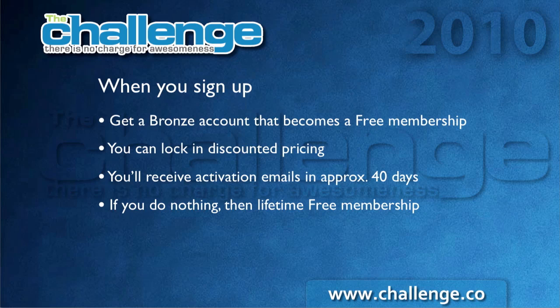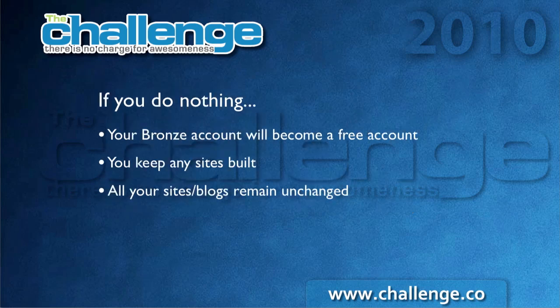If you decide to keep the bronze account, you can lock in discounted pricing on a bronze account or any of our other paid accounts when we make you offers in several weeks. Once you sign up, you'll receive activation emails in approximately 40 days, which will alert you that your bronze trial is expiring and the account is going to turn into a free account. If you want to keep your bronze membership, you can activate using one of those emails. If you do nothing, your bronze trial will become a free lifetime account.